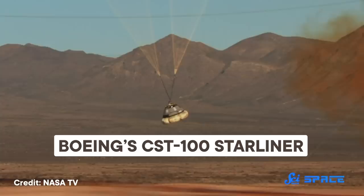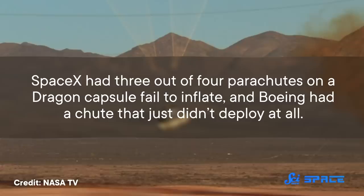But almost 50 years later, in 2019, both SpaceX and Boeing ran into similar problems. SpaceX had three out of four parachutes on a Dragon capsule fail to inflate, and Boeing had a chute that just didn't deploy at all. Parachutes have one job! Why can't we get them to do it?